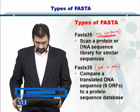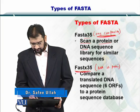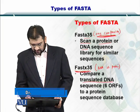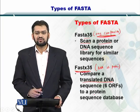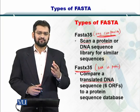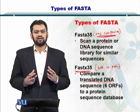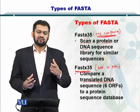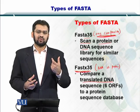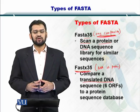The next type of FASTA is the FASTX35. This can help you to compare a translated DNA sequence to a protein sequence database. So on one side you have a DNA sequence as your query, and on the other side you have a protein database. All six open reading frames are calculated by looking at the DNA or RNA sequence, and then they are converted into a protein for comparison.